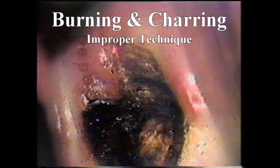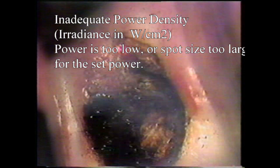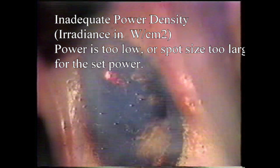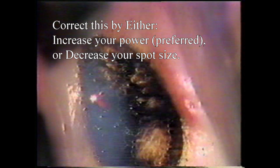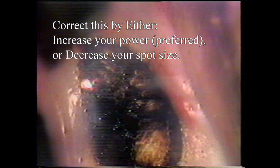Now we'll see how not to ablate tissue. Again, this is a cervix, but the power is set way too low for the spot size used, probably around 10 watts or less. The charring is obvious, and this allows significant heat to conduct deeper into tissues, causing more underlying damage.